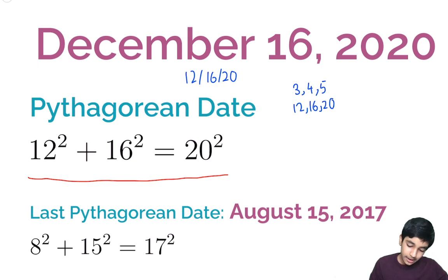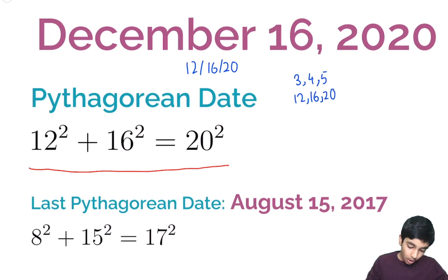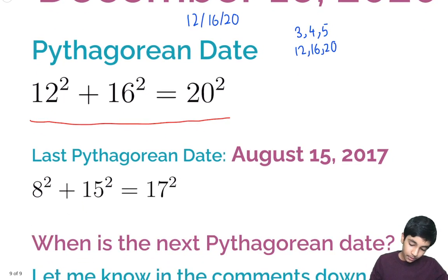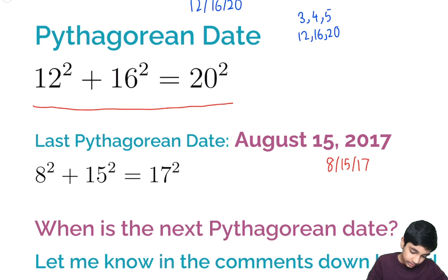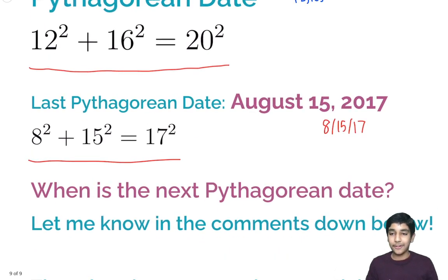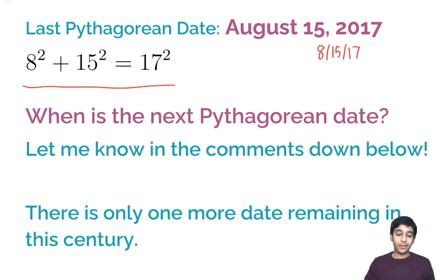So that's what's so special about this upcoming date at the time this video was uploaded. Also, the last Pythagorean date was August 15, 2017, because 8, 15, 17 is a Pythagorean triple. So when is the next Pythagorean date? Let me know in the comments down below. There's only one more such date remaining in this century, so this is definitely a special date.